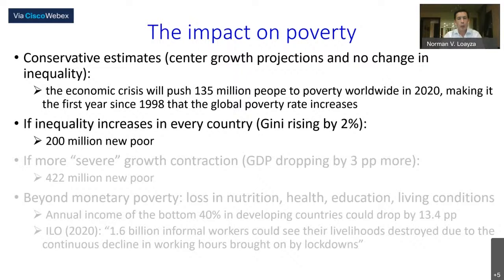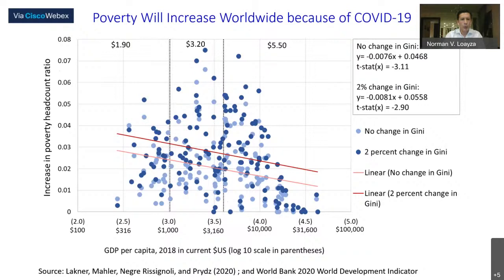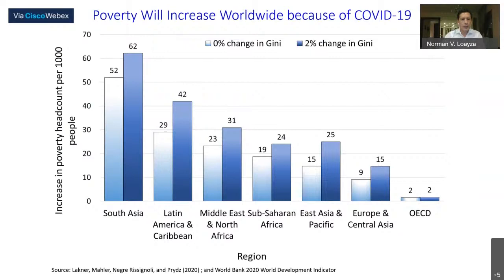This calculation of 135 million new poor is based on different poverty lines for different income groups. If inequality increases in every country — and I will argue this is likely — and the Gini increases by about two percent, the number of new poor will rise to 200 million people. It is the poorer countries where there will be a larger increase in the poverty headcount ratio, with South Asia and Latin America and the Caribbean being most affected.